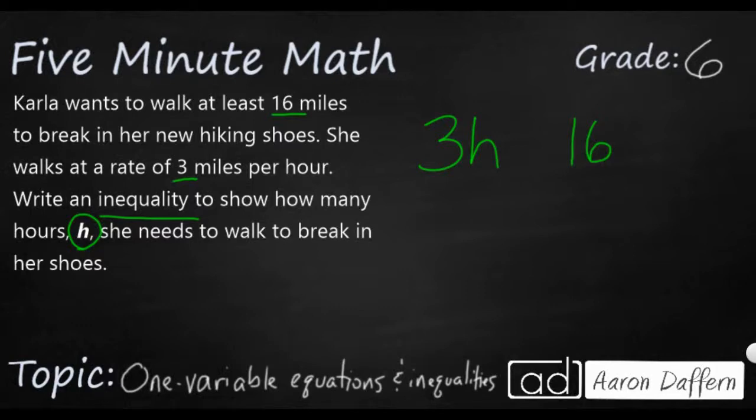So we just need this 3H to be greater than or it can be equal to 16. As long as her distance is greater than or equal to 16, she's good. She can go over. She just can't go under.